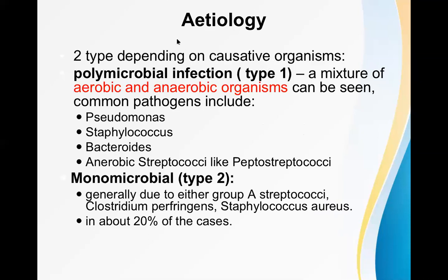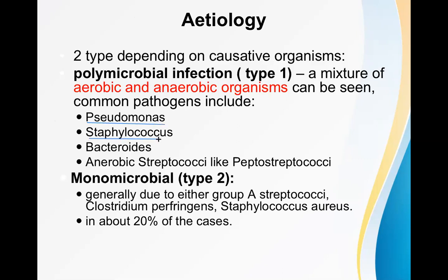Now let's revise the etiology of necrotizing fasciitis. There are two types depending on the causative organism — Type 1 and Type 2. Type 1 is more common and is a polymicrobial infection — a mixture of aerobic and anaerobic organisms including Pseudomonas, Staphylococcus aureus, Bacteroides, and anaerobic streptococci like Peptostreptococci. Pseudomonas and Staphylococcus aureus are aerobic; Bacteroides and Peptostreptococci are anaerobic.